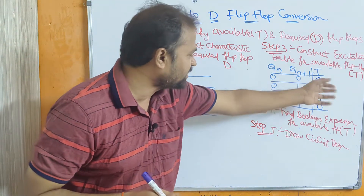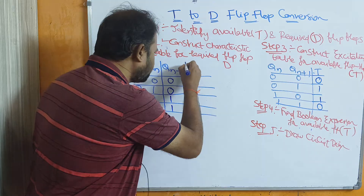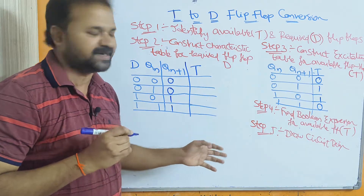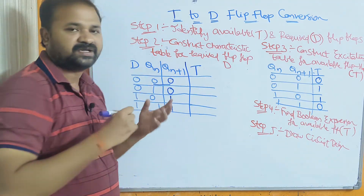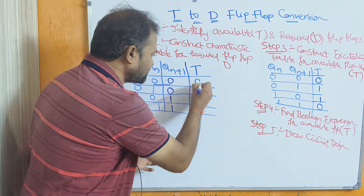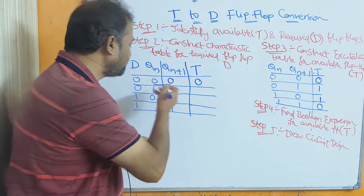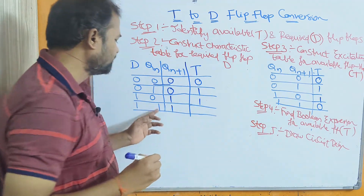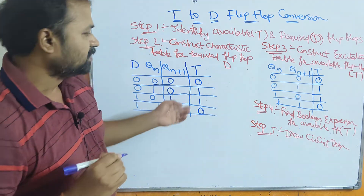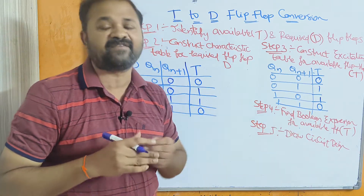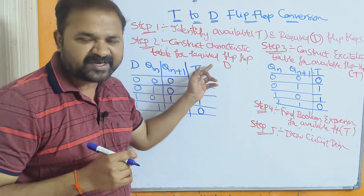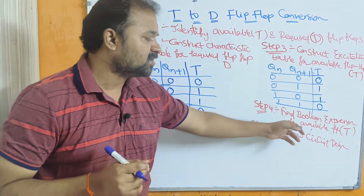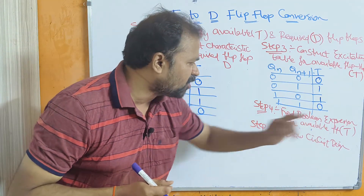According to the excitation table, we have to fill in one more column: T. According to Qn and Qn+1, we fill the table. If inputs are same (0,0), T is 0. For 1,0 — different inputs — T is 1. For 0,1 — T is 1. For 1,1 — same inputs — T is 0. Note that step 2 is based upon the required flip-flop, whereas steps 3 and 4 are based upon the available flip-flop.